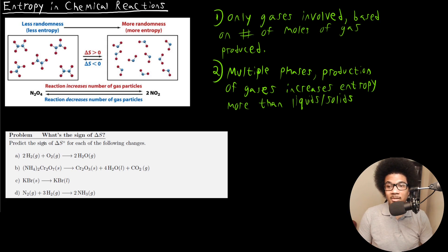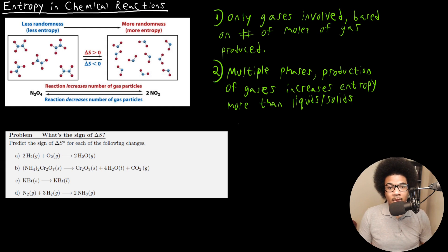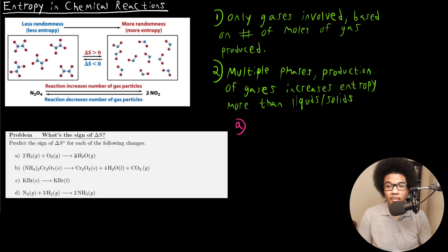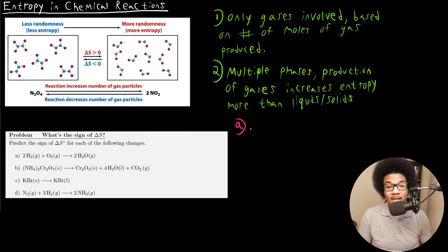This problem is asking you to predict the sign of ΔS for each of the reactions. You don't have to calculate anything; you just have to look at the reaction and be able to tell whether there's going to be an entropy increase or decrease. For part A, we have hydrogen reacting with oxygen to form two moles of H2O. Everything here is a gas, so we really only have to deal with the number of moles. In the reactants we have three moles of gas; they react to form two moles of gas. So that's going to result in more order — a decrease in entropy — because you're producing fewer moles of gas than you're starting with. So that's going to be a negative ΔS.